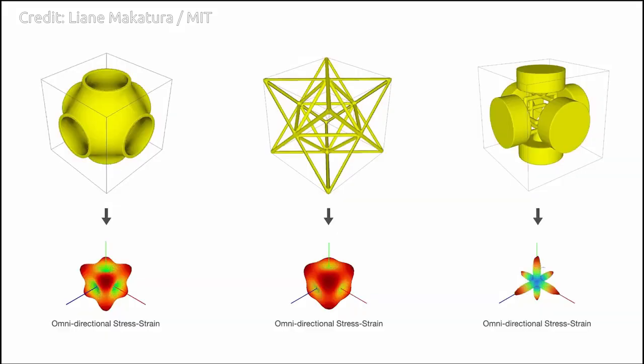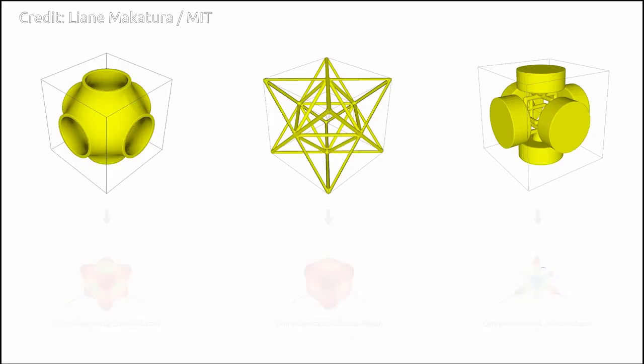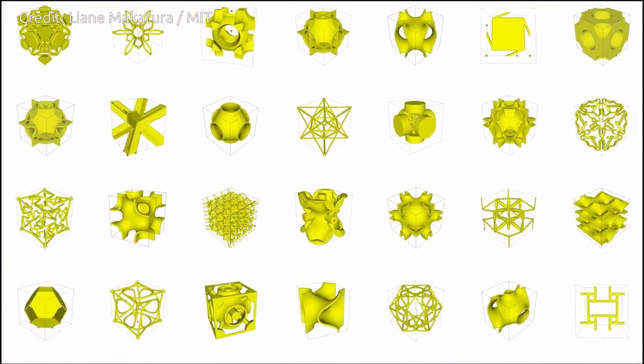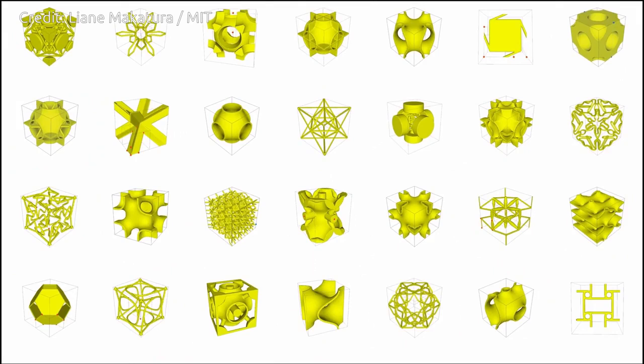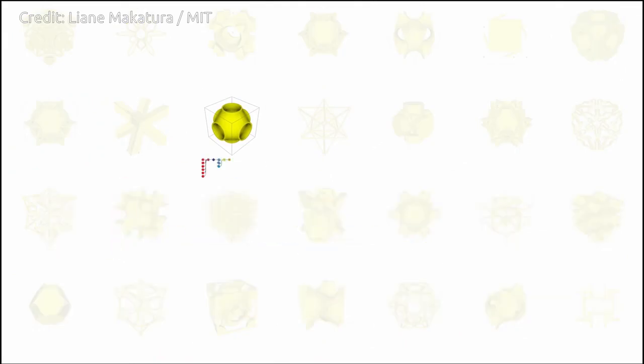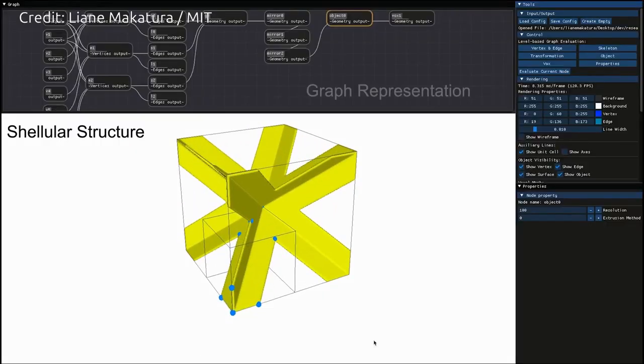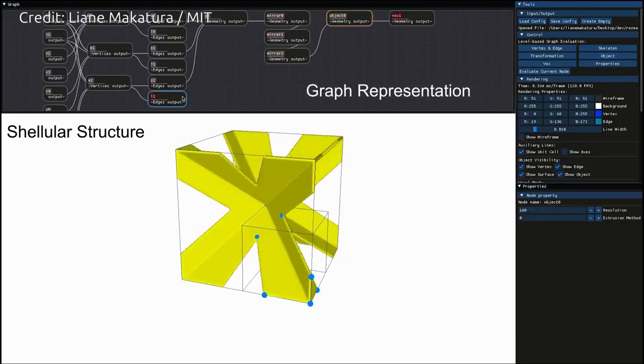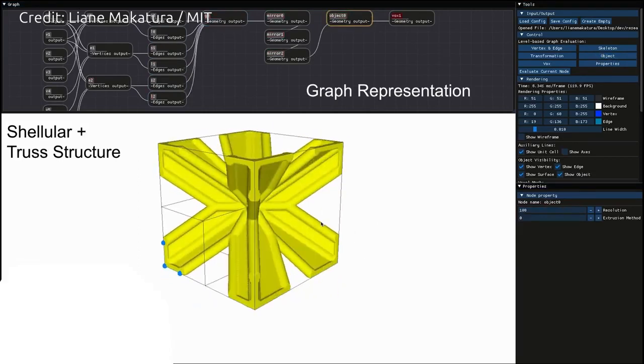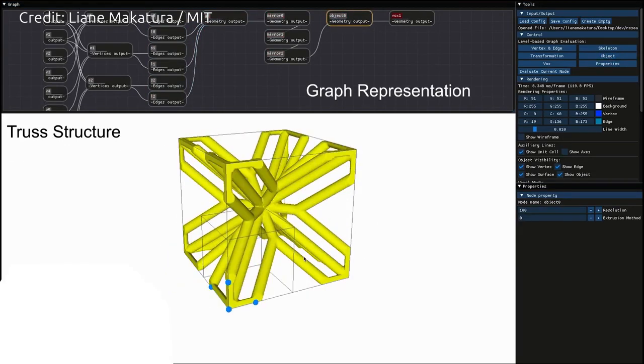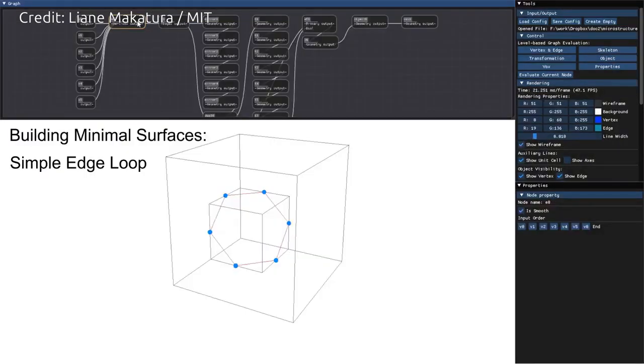But it is difficult to know which cellular structure will lead to the desired properties. Even if one focuses on structures made of smaller building blocks, like interconnected beams or thin plates, there are an infinite number of possible arrangements to consider. So engineers can manually explore only a small fraction of all the cellular metamaterials that are hypothetically possible.